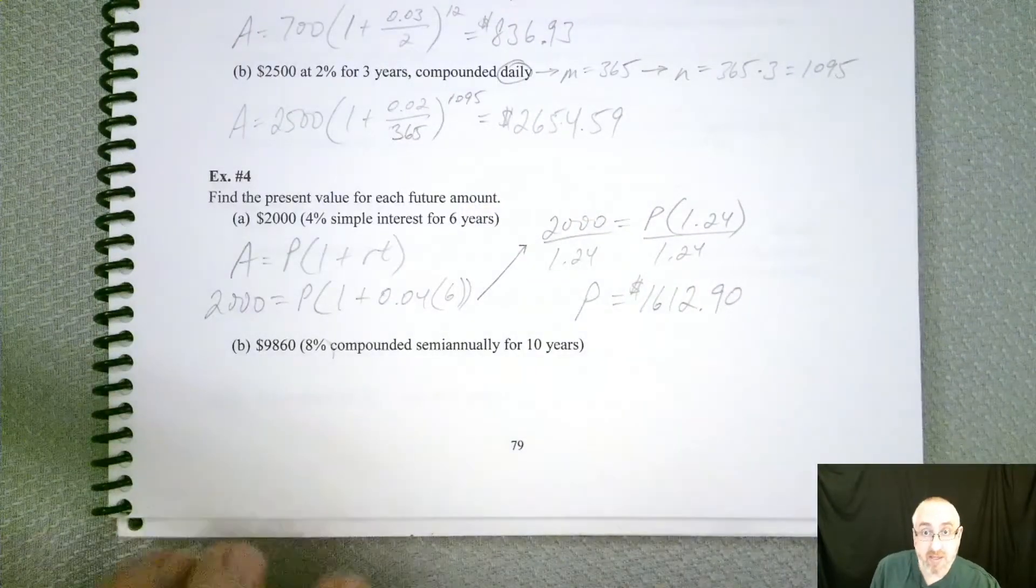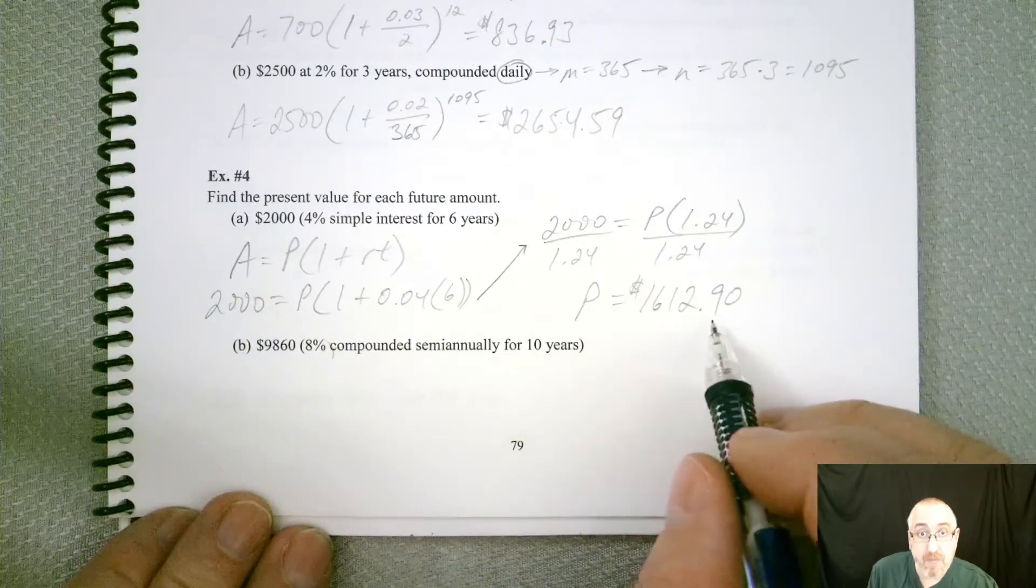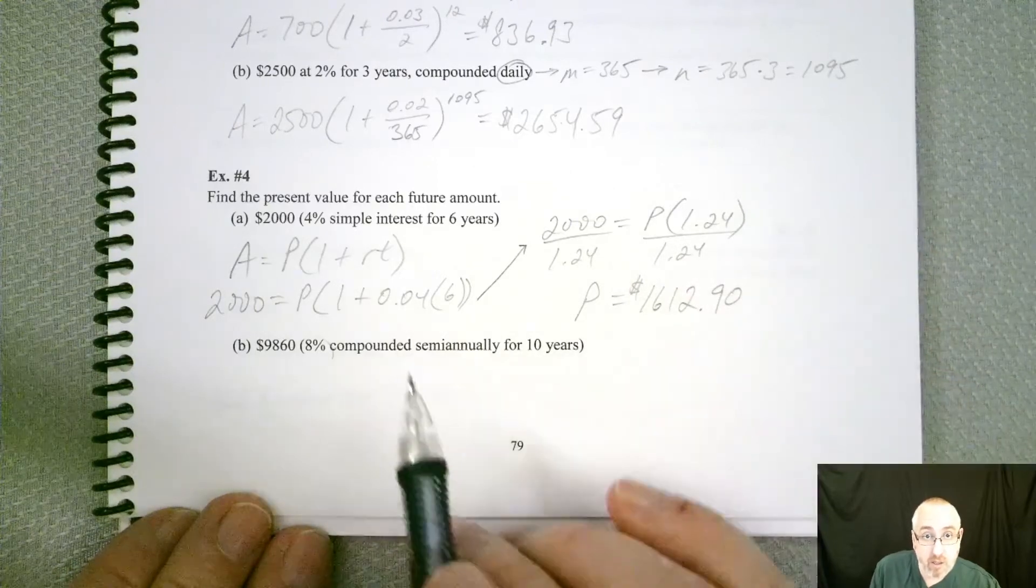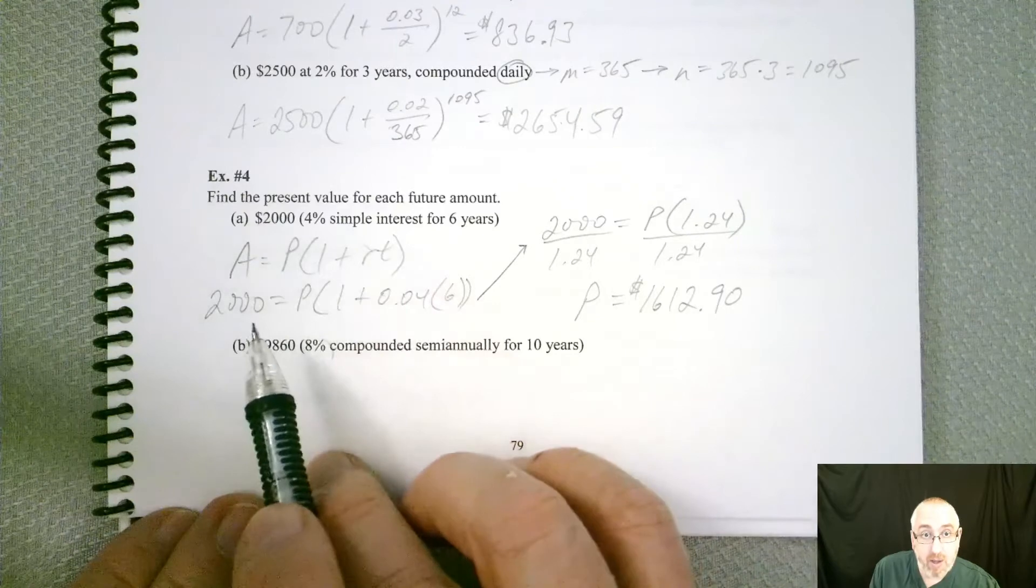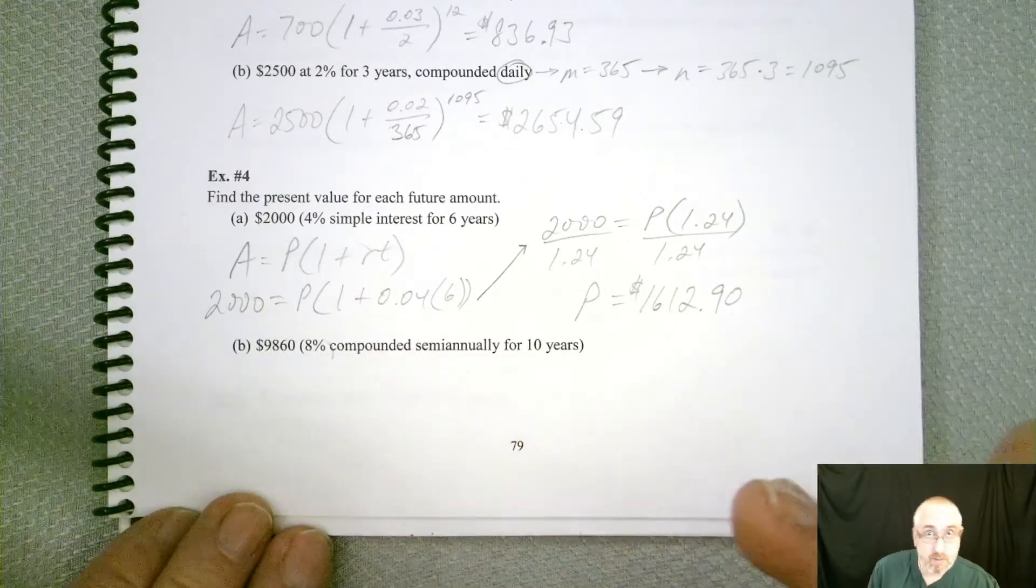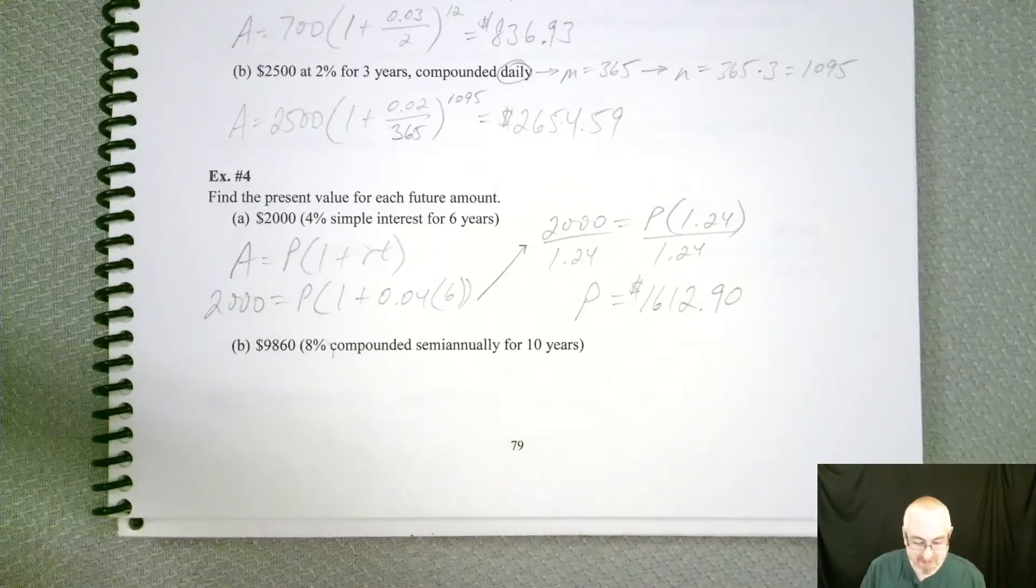So the way to interpret this is that if I deposited $1,612.90 at one point in time and then I waited six years with a 4% simple interest rate, I would end up with $2,000 in six years. So whatever you think about that, is it good or not?